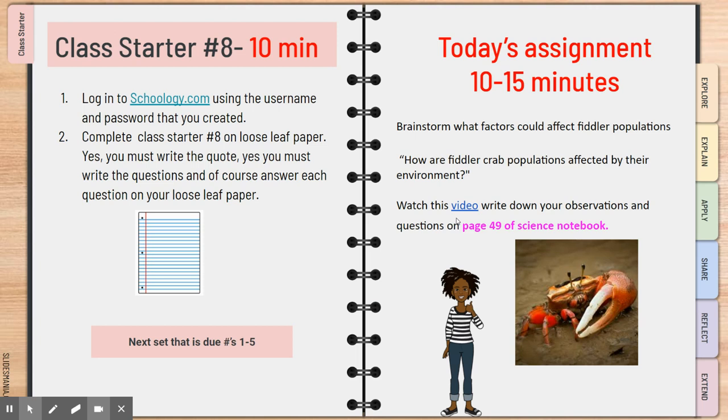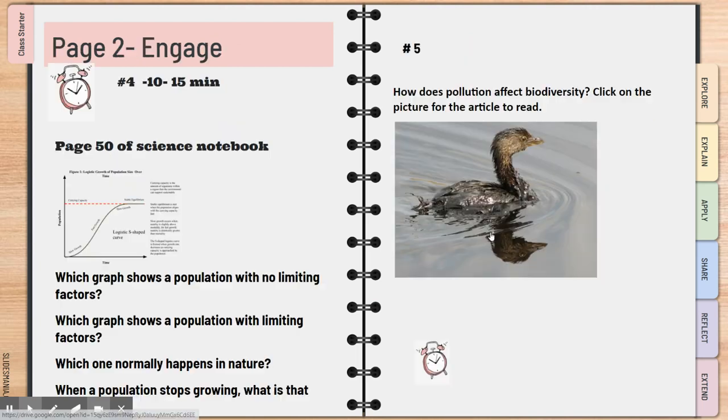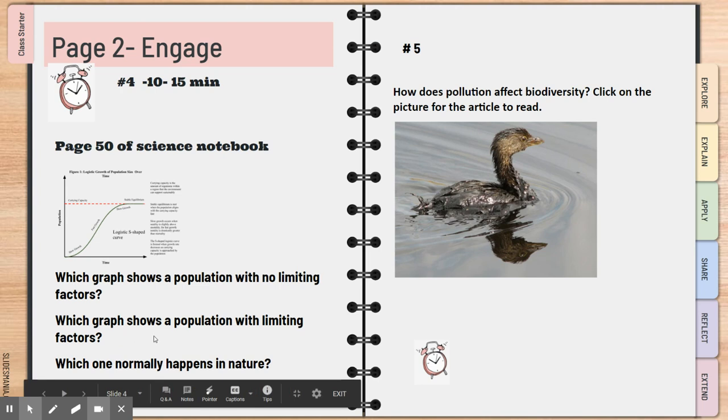We're starting off with our fiddler crab population activity. Don't forget to watch the video and then jot down those observations on page 49. Then after you finish that, we will work on page 50 of the Science Notebook. If you click here, it's a picture, and these are the questions to answer.